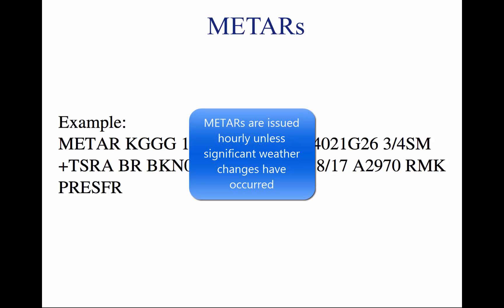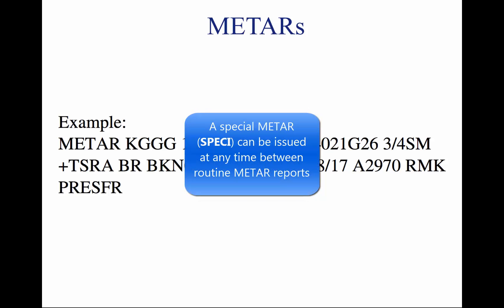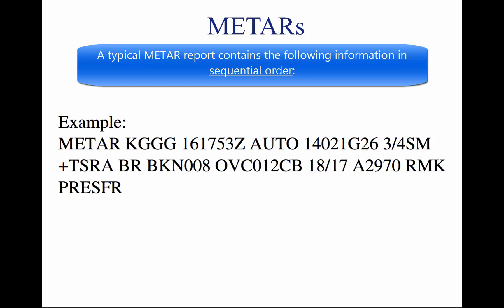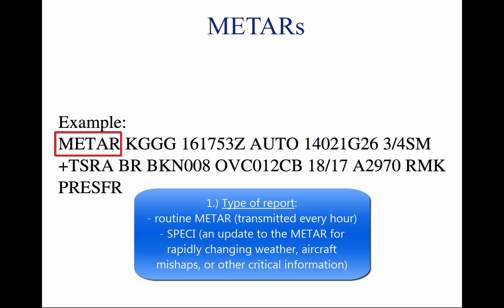METARs are issued hourly unless significant weather changes have occurred. A special METAR, SPECI, can be issued at any interval between routine METAR reports. A typical METAR report contains the following information in sequential order. One, type of report — METAR. There are two types: the routine METAR transmitted every hour, and the aviation-selected SPECI, a special report that can be given at any time to update the METAR for rapidly changing weather conditions, aircraft mishaps, or other critical information.